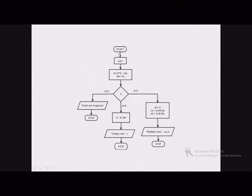Here I have shown a flowchart for calculating roots of a quadratic equation. The first step is accepting data — the values of coefficients A, B, C. After that, we calculate D, a temporary variable storing B²−4AC. DE is another temporary variable which stores the value of 2A. We have used temporary variables to minimize the size of expressions for calculating roots. Based on the value of D, control will be transferred to one of three parts.